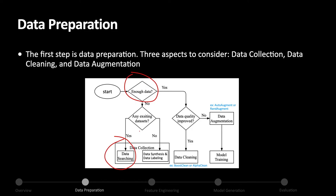After collecting enough data, we go through the data cleaning process to fix or remove incorrect data. There are some automated data cleaning tools like BootsClean or AlphaClean. Data augmentation can also be regarded as a tool for data preparation, as it can generate new data based on existing data. There are some automated data augmentation tools for image classification, like AutoAugment or RandAugment.